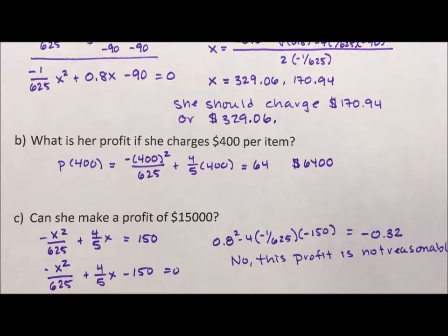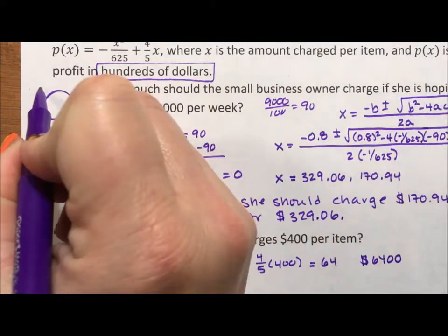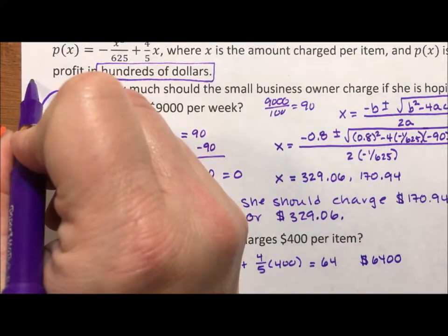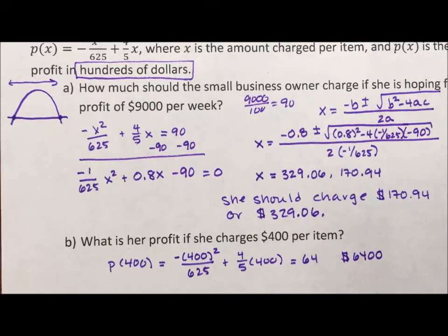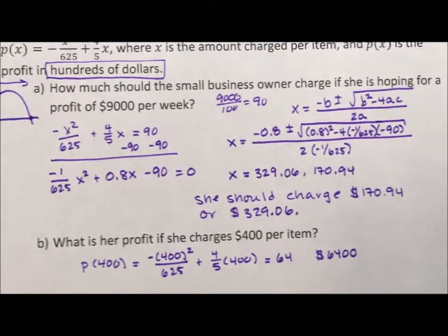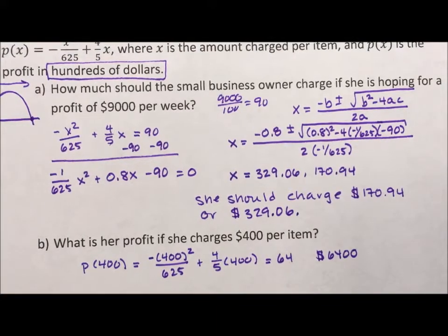Going back to the graph, a $1,500 profit corresponds to a value that is above the parabola — above the line of possibilities. I hope you've enjoyed this video. Please subscribe to my YouTube channel, like my Facebook page, and I'll see you on the next video. Thanks!